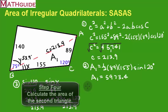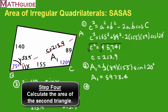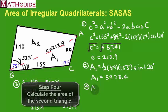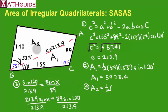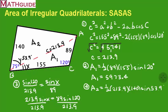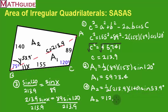The fourth step is to calculate the area of the second triangle, Area 2. Using the same formula — one-half times the two sides times the sine of the included angle — I take one-half times 213.9 times 140 times sine of 53.9 degrees. Throwing that into a calculator, Area 2 comes out to 12,098.